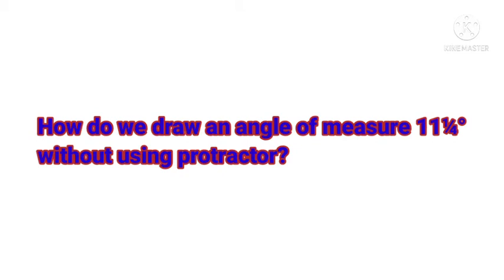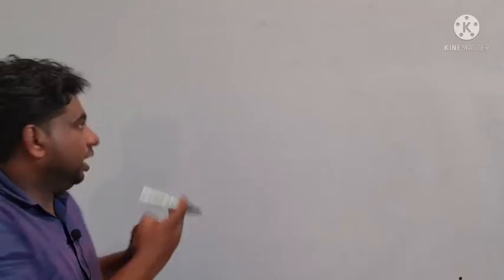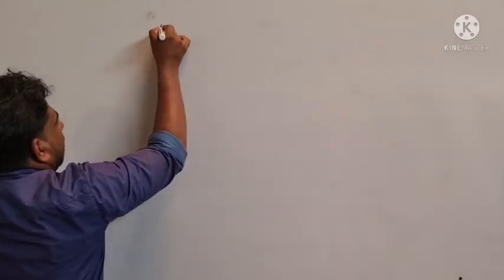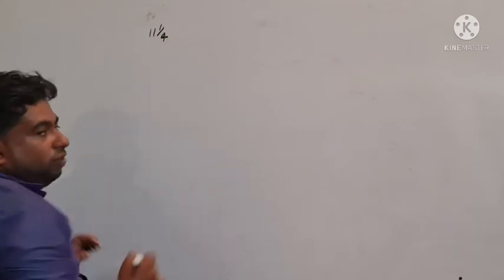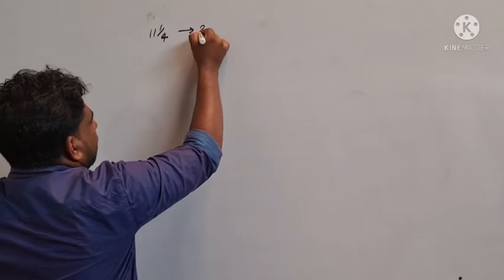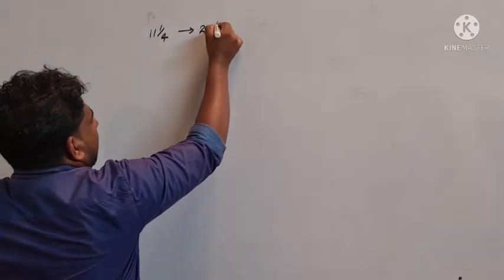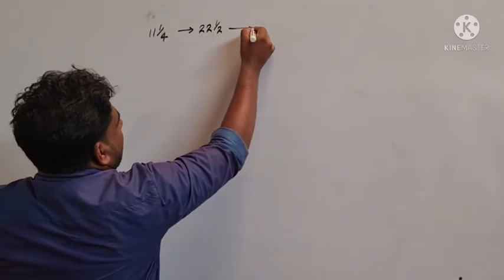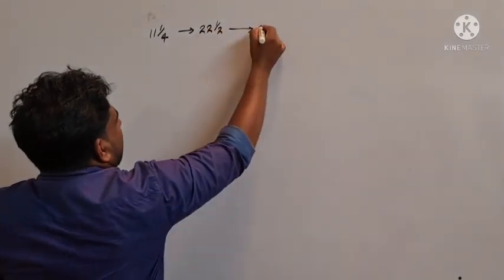How do we draw an angle of measure 11 quarter degree without using a protractor? We have a question about the angle of measure 11 quarter degree. How do we draw an angle of measure 11 quarter degree? Now, 45.